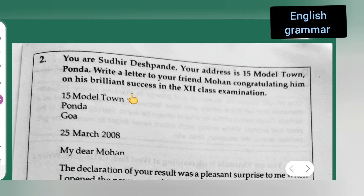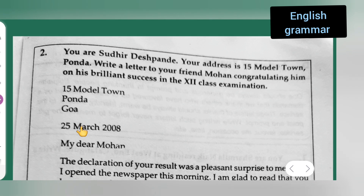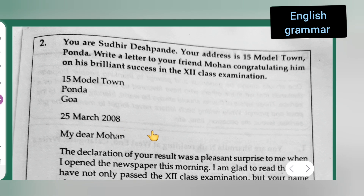First, you will have to write the address which is given: 15th Model Town, Ponda, Goa. Next, leave one line and write the date — month and year: 25th March 2008. Then write 'My Dear Mohan,' since you are writing a letter to your friend Mohan.